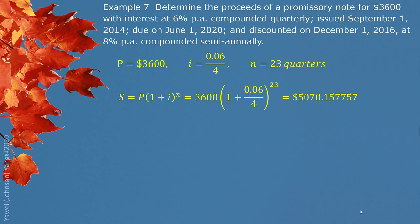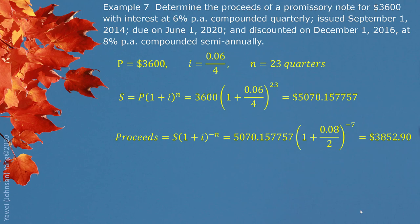We then discount this maturity value to the trading date using the market interest rate of 8% compounded semiannually. We are now looking for the present value at 8% divided by 2. From the trading date of December 1, 2016 to the maturity date of June 1, 2020, we count 3 and a half years, which gives us 7 half-years. This gives us the price of the promissory note discounted on December 1, 2016 as $3,852.90. Keep in mind: the maturity value of a promissory note must be calculated first, and then we can calculate the proceeds or price of the note before the maturity date from the maturity value. See you next time.